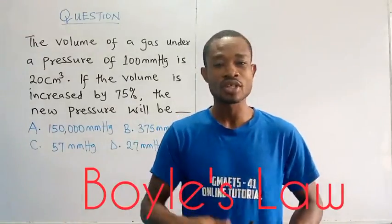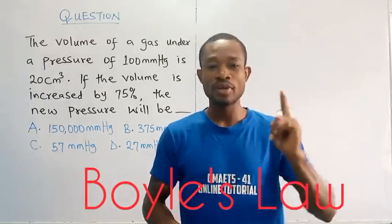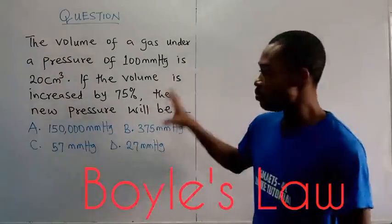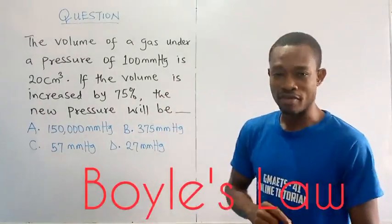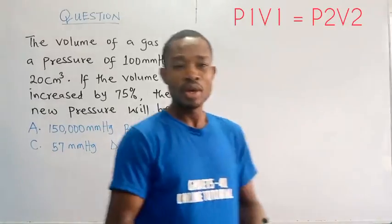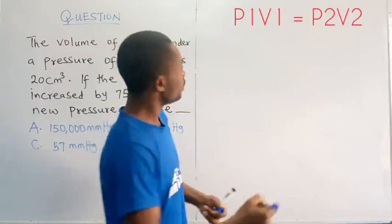Boyle's law tells us that if temperature is constant, pressure will be inversely proportional to volume. So clearly this is a Boyle's law related problem. It's a simple one because we know according to Boyle's law, P1V1 would be equal to P2V2.